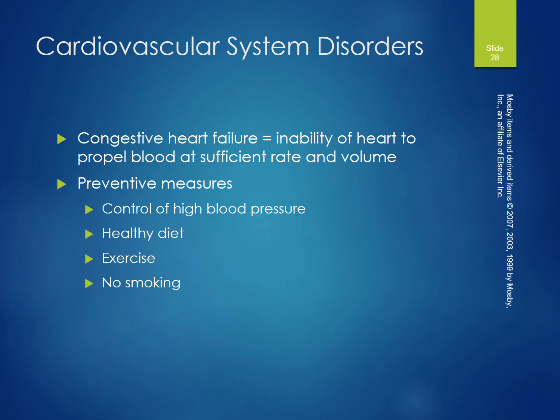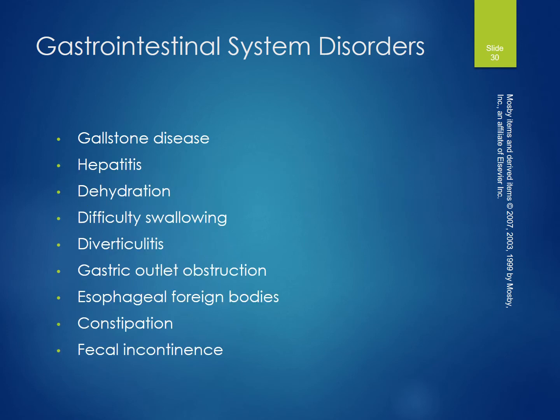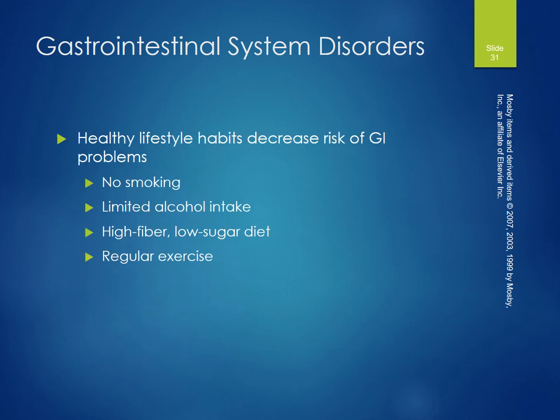Congestive heart failure is the inability of the heart to propel blood at a sufficient rate and volume. Preventive measures include controlling high blood pressure, healthy diet, exercise, and no smoking. Gastrointestinal system disorders include colorectal cancer, the second most common cause of cancer-related mortality after lung cancer. Early detection measures are very effective and increase survival. Other conditions include peptic ulcer disease, bleeding, pancreatitis, gallstones, hepatitis, dehydration, difficulty swallowing, diverticulitis, gastric outlet obstruction, esophageal foreign bodies, constipation, and fecal incontinence. Healthy lifestyle habits — no smoking, limited alcohol intake, high fiber low sugar diet, and regular exercise — decrease GI problems.